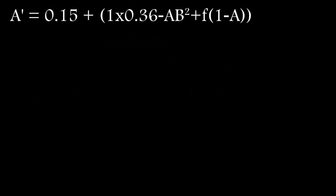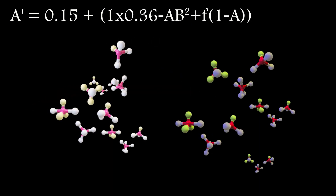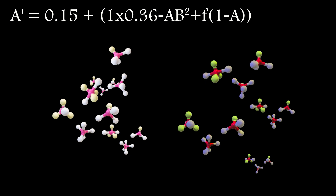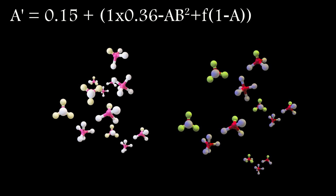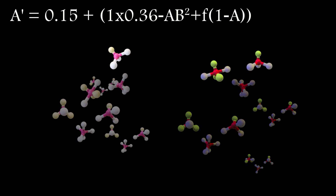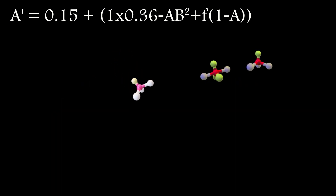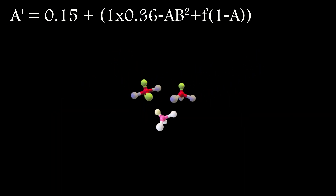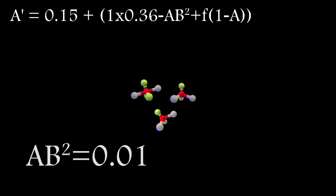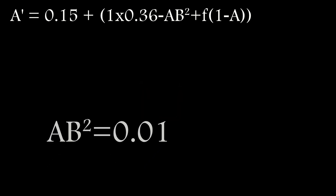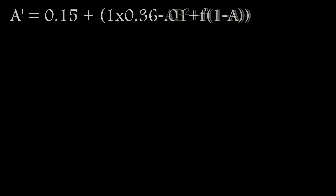The next term is the reaction rate. The reaction shown above requires one part A and two parts of B. Such a reaction takes place at a rate proportional to the concentration of A times the square of the concentration of B, and it actually converts A into B.